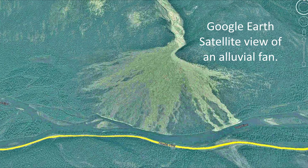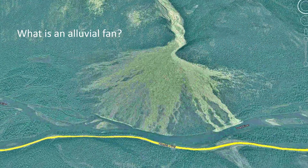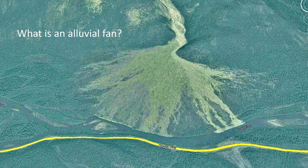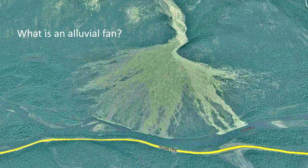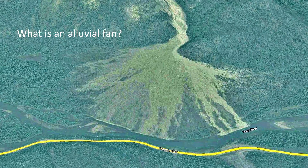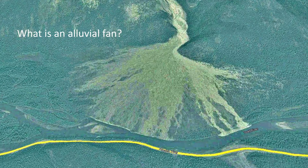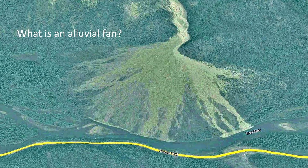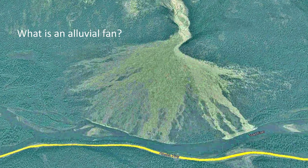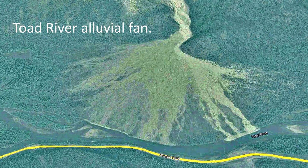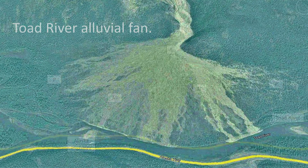So let's get right into this cool mountain geological landform called an alluvial fan. Before we get going we should address the question: what is an alluvial fan? To answer that question we'll first look at a simple alluvial fan located along the Alaska Highway between Toad River Lodge and Muncho Lake. I will call this the Toad River alluvial fan.